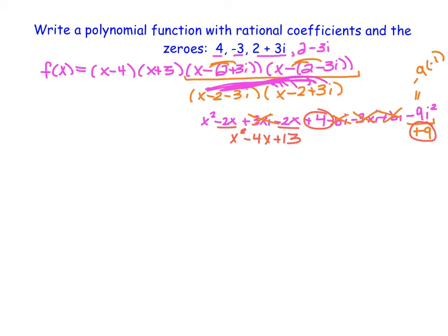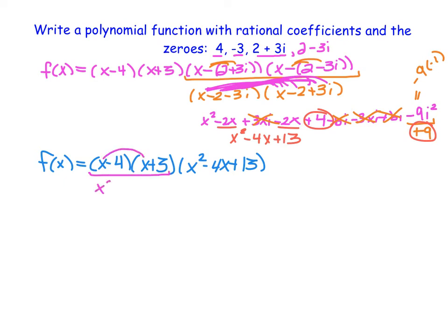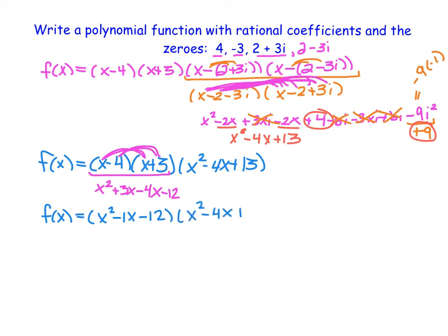We can now rewrite the full equation as f of x equals x minus 4 times x plus 3 times x squared minus 4x plus 13. I'll multiply out the two smaller binomials first: x times x is x squared, x times 3 is 3x, negative 4 times x is minus 4x, and negative 4 times 3 is negative 12. This gives x squared minus x minus 12.